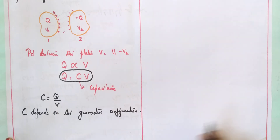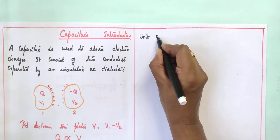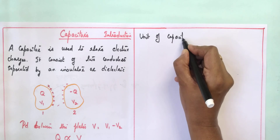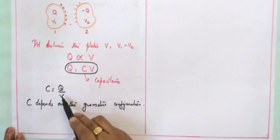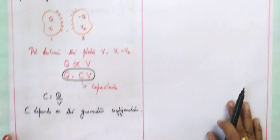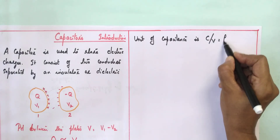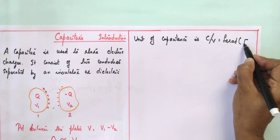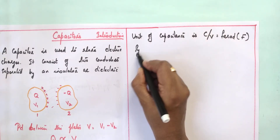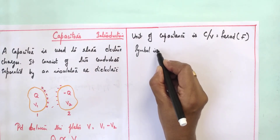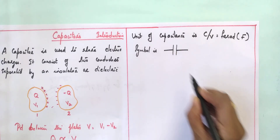The unit of capacitance is derived from C equals Q divided by V, so its unit is coulombs per volt. This unit is called the farad, with the capital letter F as its symbol. The symbol of a capacitor consists of two plates — one positive and one negative.